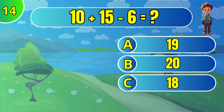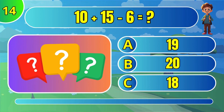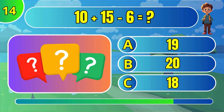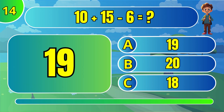What is 10 plus 15 minus 7? The answer is B: 19.